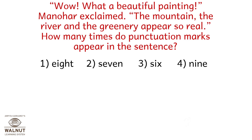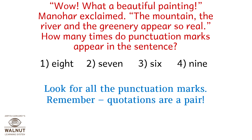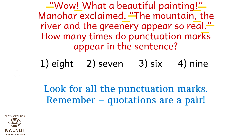Wow, what a beautiful painting, Manohar exclaimed. The mountain, the river and the greenery appear so real. How many times do punctuation marks appear in the sentence? Look for all the punctuation marks. Remember, quotations are a pair. Counting: exclamation, comma, comma, comma, full stop, quotation marks (pair), comma, full stop — that makes a total of seven punctuation marks, which is option number 2.